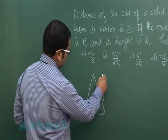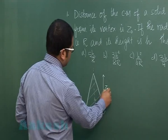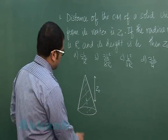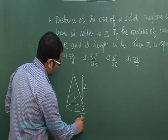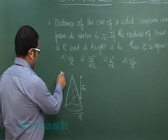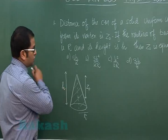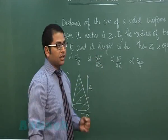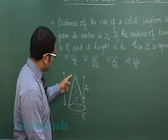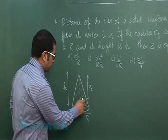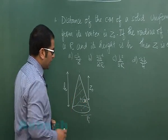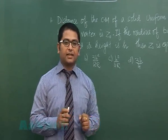It has been said if the radius of the base is R and the height, so this one is the height, that has been given to be H, then we need to calculate the value of Z naught, the distance of center of mass from the vertex.